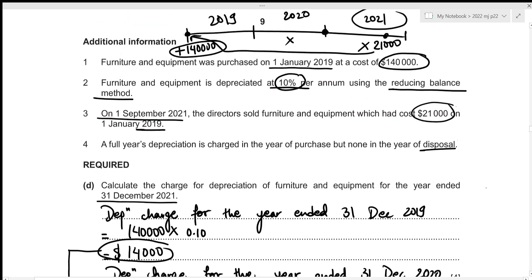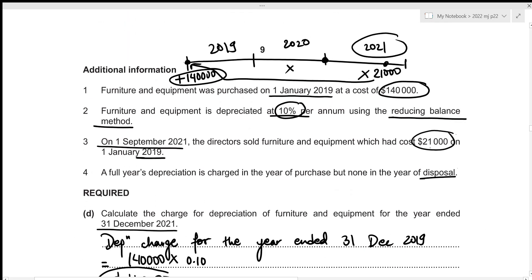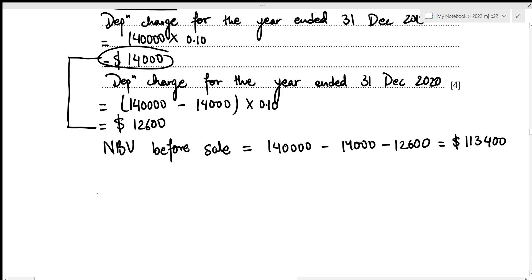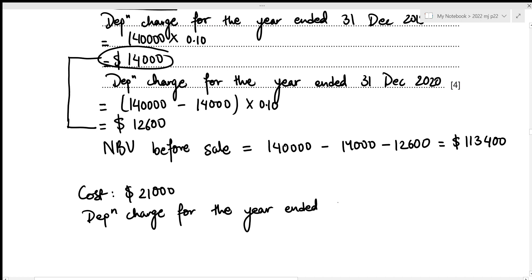Now we repeat the same process for just the disposed furniture, which had a cost of $21,000. For the year ended 31st December 2019, since it's the year of purchase, no accumulated depreciation: 21,000 × 0.10 = $2,100 depreciation charge.